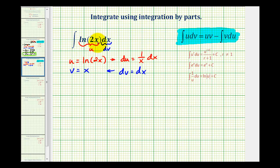The integral of natural log 2x with respect to x is equal to u times v, which would be x natural log 2x, minus the integral of v du. Here's v and here's du, so we'll have the integral of x times 1 over x dx.